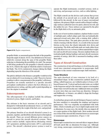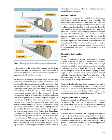Monocoque. Monocoque construction uses stressed skin to support almost all loads, much like an aluminum beverage can. Although very strong, monocoque construction is not highly tolerant of deformation of the surface. For example, an aluminum beverage can supports considerable forces at the ends of the can, but if the side of the can is deformed slightly while supporting a load, it collapses easily. Because most twisting and bending stresses are carried by the external skin rather than by an open framework, the need for internal bracing was eliminated or reduced, saving weight and maximizing space.